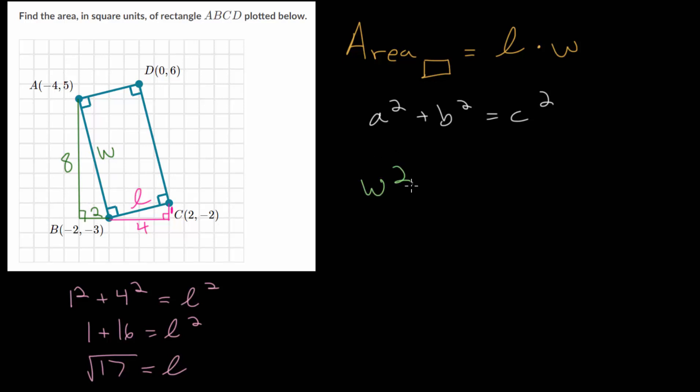So we have that w squared is eight squared plus two squared. And eight squared, that's 64. Two squared is four. So we get 68. And we're going to take a square root of each side. So w is the square root of 68.